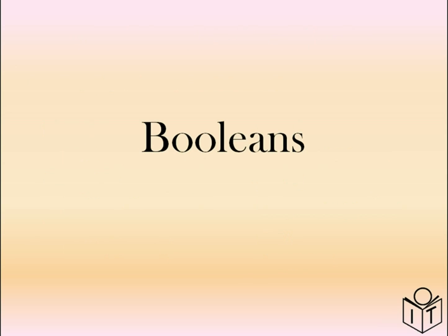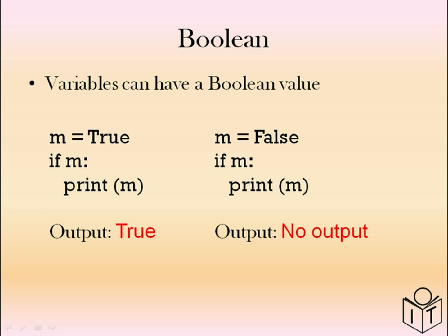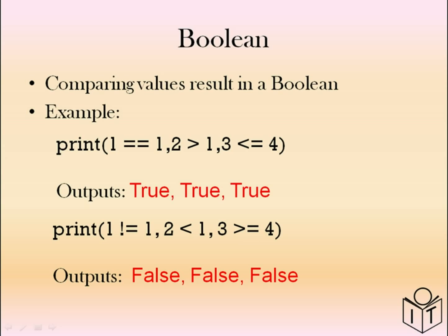Now we move on to booleans. A boolean is a data type and it can have the value of true or false, and we can use it in a condition. In an if statement, if the condition is true, the code will action — so in this example, m will be printed. In the second example, the condition is false, so nothing is printed. Examples of true conditions: 1 equals 1, 2 is greater than 1, 3 is less than 4. Examples of false conditions: 1 not equal to 1, 2 less than 1, 3 greater than 4.